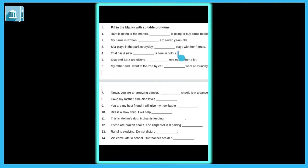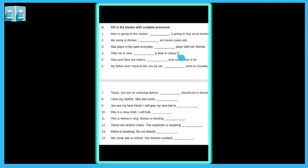According to this exercise, you have to do all the exercises in your notebook. Fill in the blanks with suitable pronouns. 'Ram is going to the market. Dash is going to buy some books.' What is the suitable pronoun? The noun in the first sentence is Ram. Ram कौन है? Boy — means one singular noun, a boy. So हम use करेंगे 'he'. He is going to buy some books.